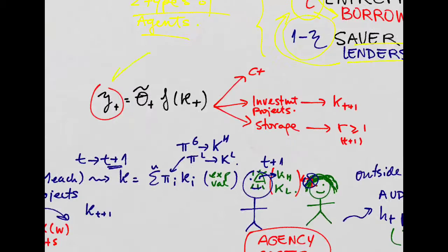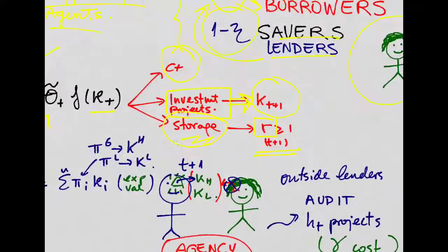Now, output in this economy, which is just a function of capital and productivity, can go into three things. It can be consumed, or it can be invested into the projects of the entrepreneurs, and they will convert this capital into capital in the next period, and into storage, which will return a rate of return fixed that is greater than one. So, you can either consume or invest either in the investment projects with the entrepreneurs, or store your money.